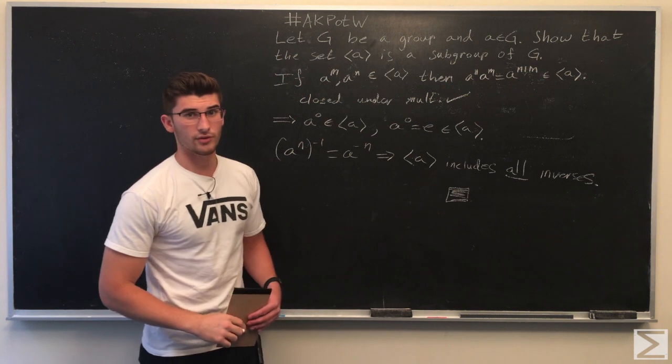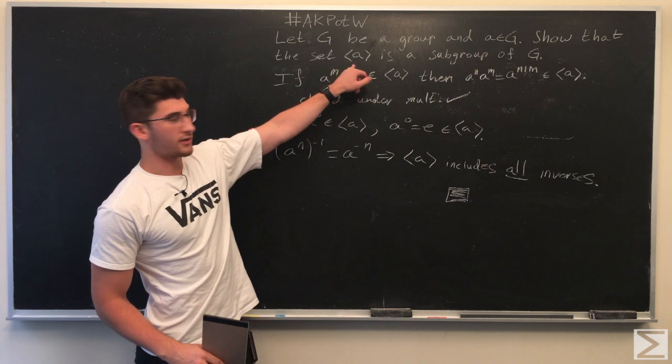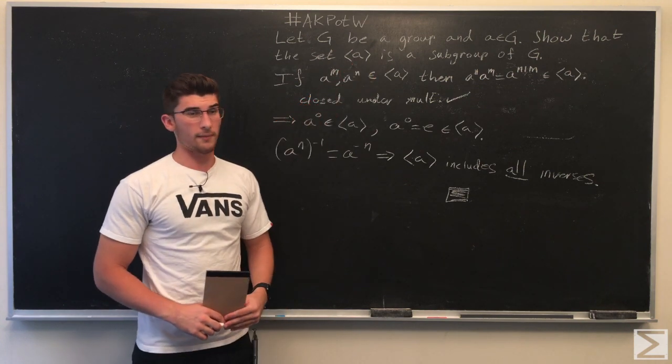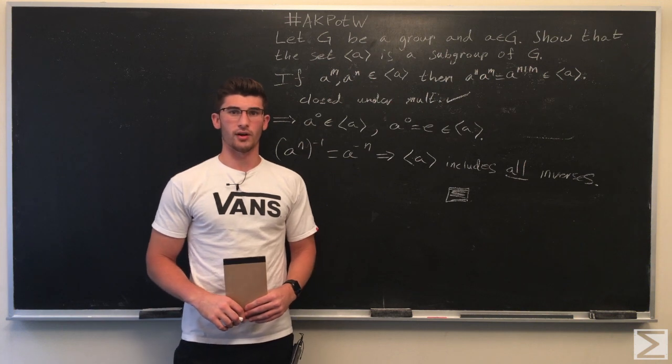So once you've shown those three things, you can conclude that the set of things generated by A is indeed a subgroup of the group G.